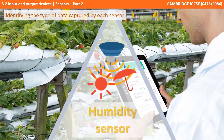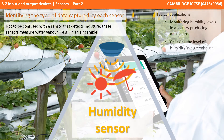Next up is humidity sensors. These shouldn't be confused with sensors that detect moisture, which we'll look at in a moment. These sensors measure the amount of water vapour, for example in a body of air. They are commonly used in high precision production facilities to monitor humidity in the air, for example a factory producing electronics, and also for monitoring humidity levels in a greenhouse.